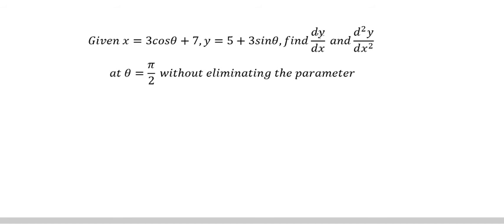We want to find dy over dx. So the first thing we need to find dx over d theta. So we will get about negative 3 sin theta. dy over d theta, you will get about 3 cos theta.